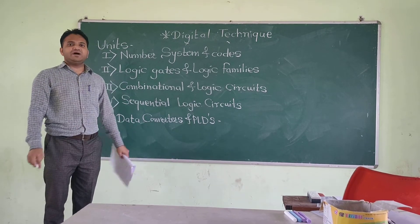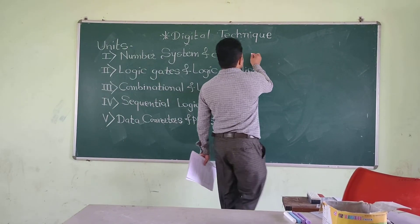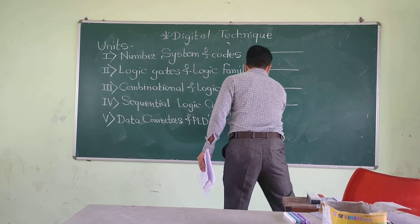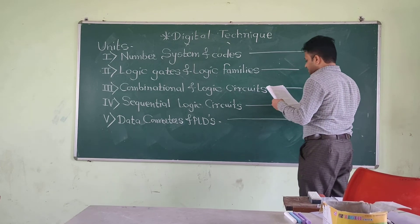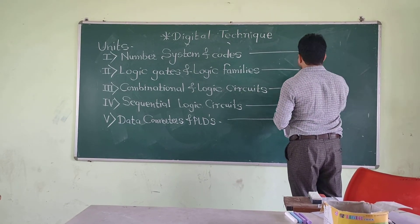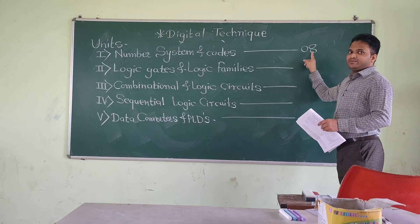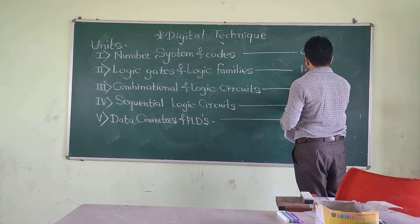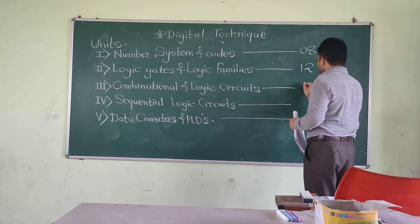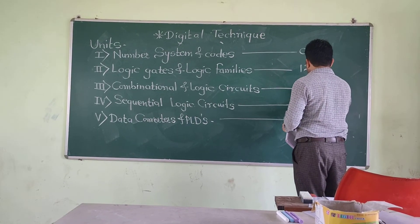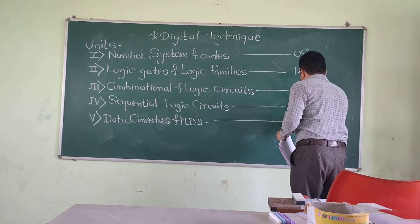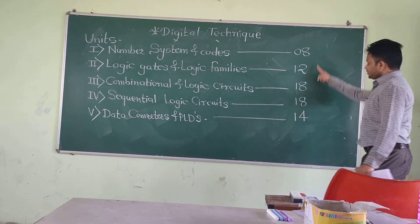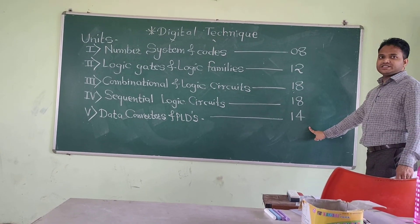Now let's look at the marks distribution across units. The first unit is for 8 marks, the second unit is for 12 marks, the third unit is for 18 marks, the fourth unit is for 18 marks, and the last unit is for 14 marks, so the total is 70.